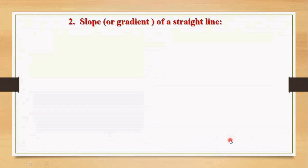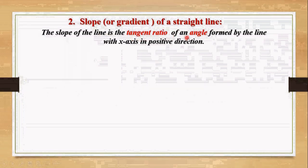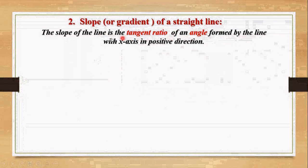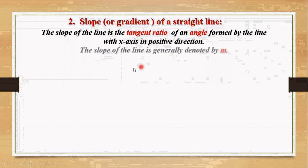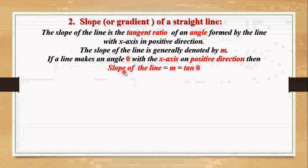Let's move on and define the slope, or gradient, of a straight line. The slope of the line is the tangent ratio of the angle formed by the line with the x-axis in the positive direction. The slope is generally denoted by m. In other words, if a line makes an angle theta with the x-axis in the positive direction, then slope m equals tan theta.